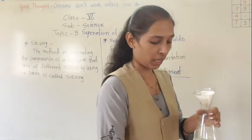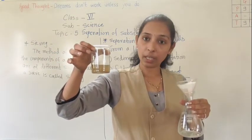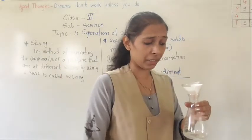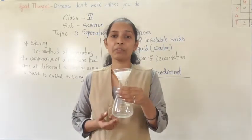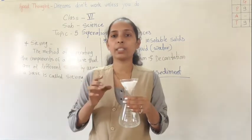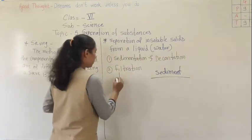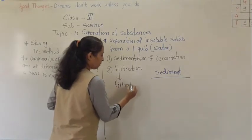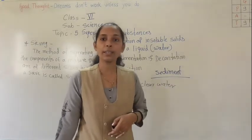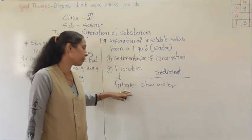Because the filter paper has very tiny holes, it will take some time to filter the water. After filtration, at the bottom of the conical flask we will get clear water. That clear water is called filtrate.